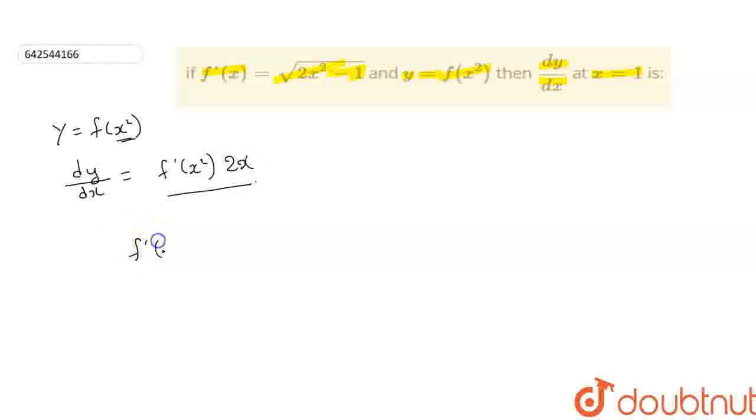So in the given question, f dash x square, we can write this one as 2x multiplied into 2x square minus 1.